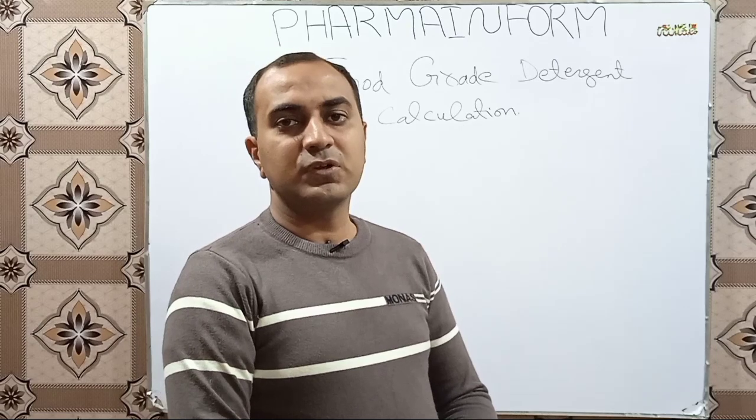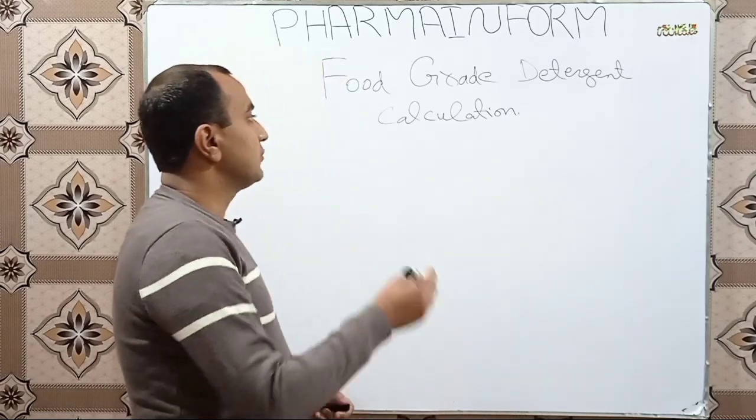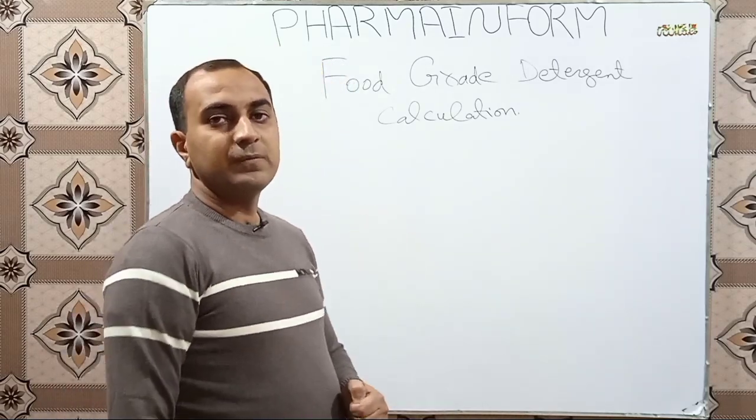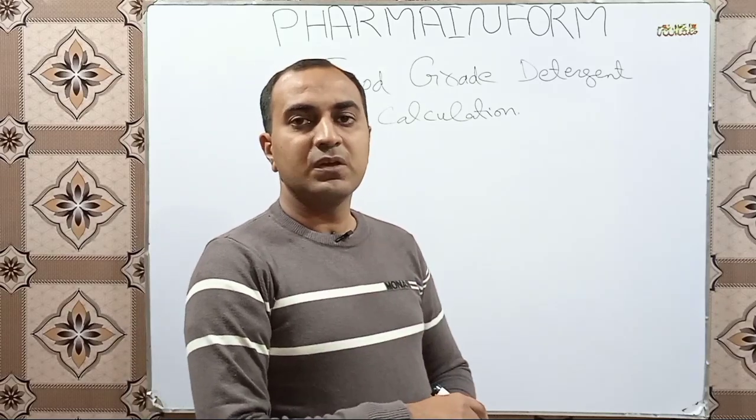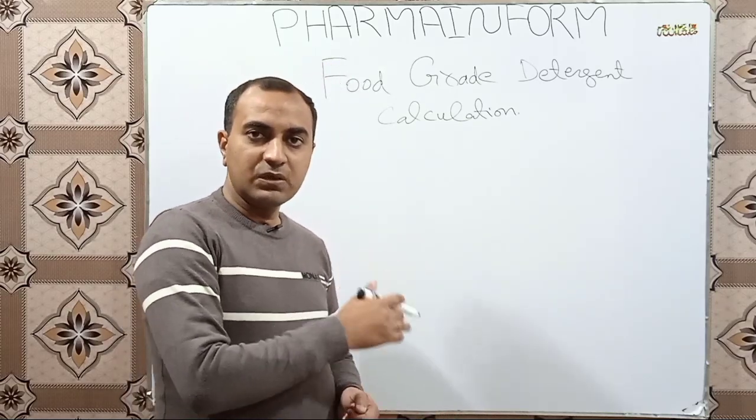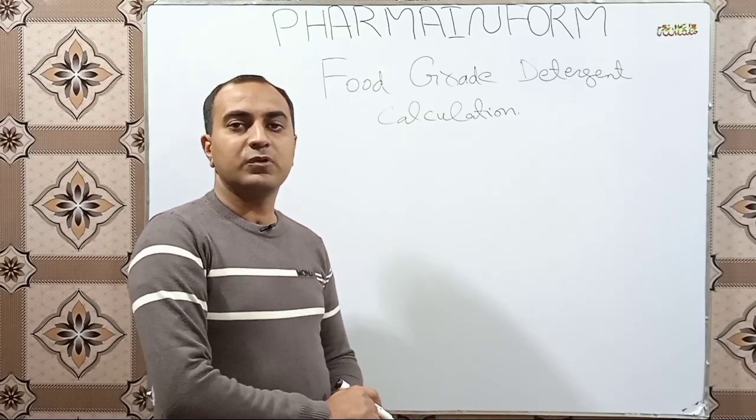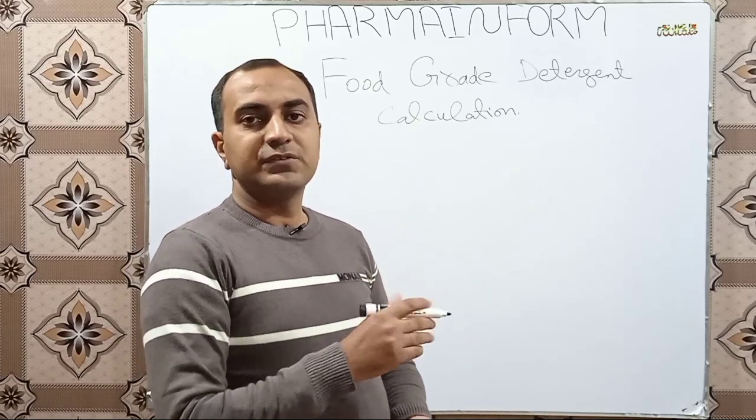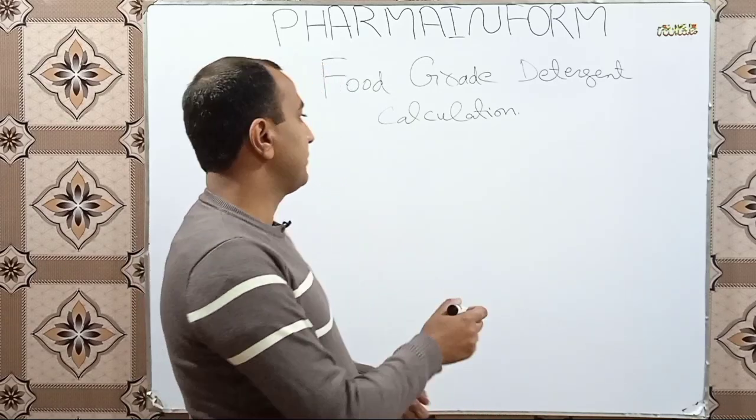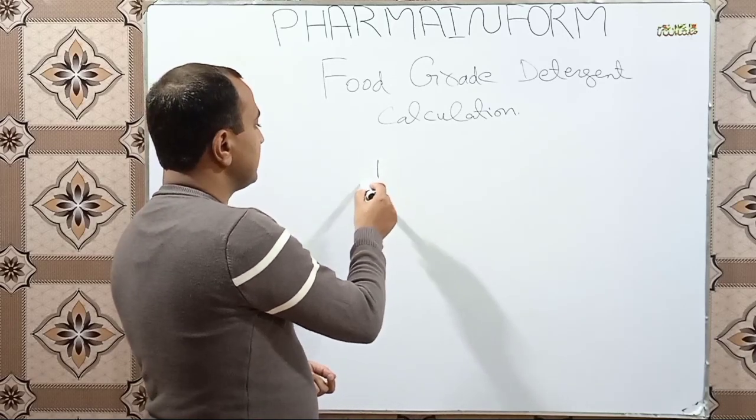If we want to prepare one liter of food grade detergent having a concentration of one percent, how is it prepared? The simple calculation is: